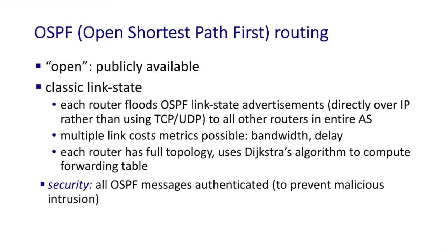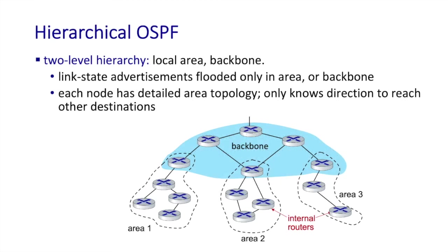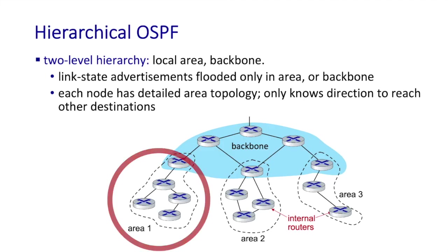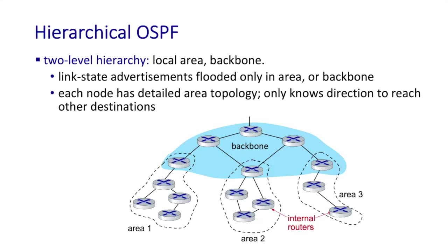One important innovation in OSPF is that all messages are authenticated. OSPF can also operate in a hierarchical mode with two levels: local areas and a backbone. In the figure we see three areas — area one, two, and three — plus a backbone. Link state advertisements are only flooded within an area or within the backbone, scoping the information flow across the hierarchical network.